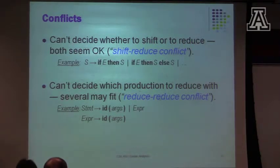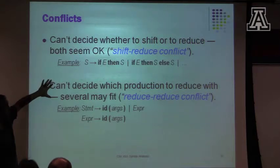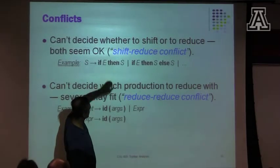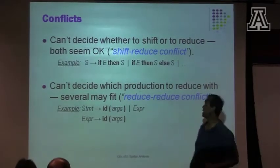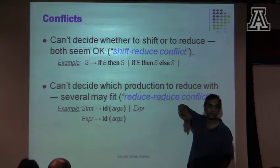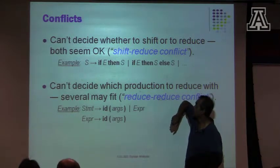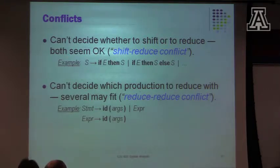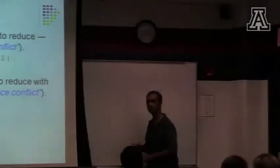A canonical example of a shift-reduce conflict is in the if-then-else construct. Most programming languages give you an if-then-else construct where the else part is optional. So let's think about what that means. Suppose I have a grammar that says a statement can go to this construct, or it can go to this construct, or it can go to some other statement.